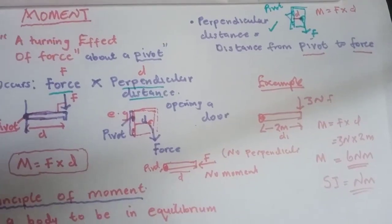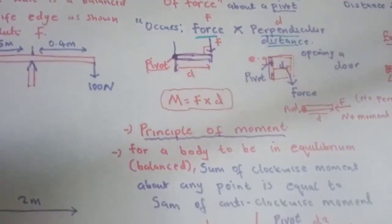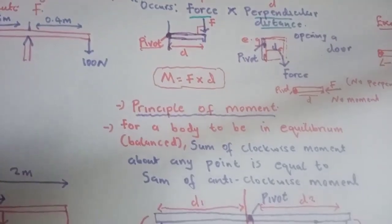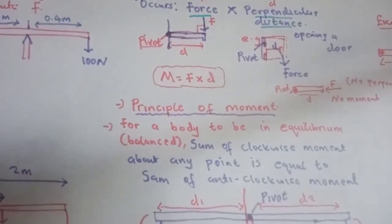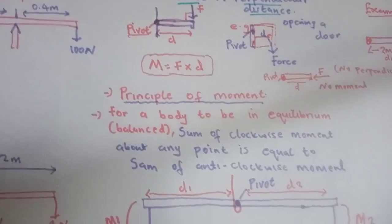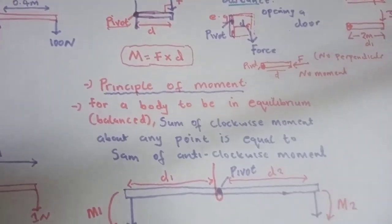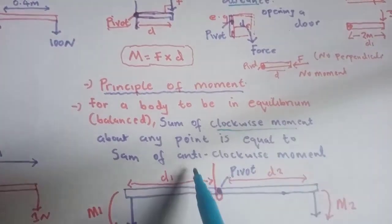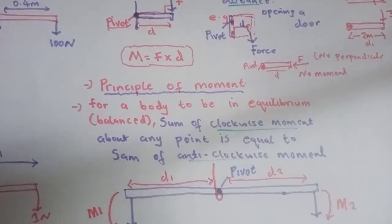Now let's look at the principle of moments. For a body to be in equilibrium, the sum of anti-clockwise moments must be equal to the sum of clockwise moments. Clockwise moment must equal anti-clockwise moment.